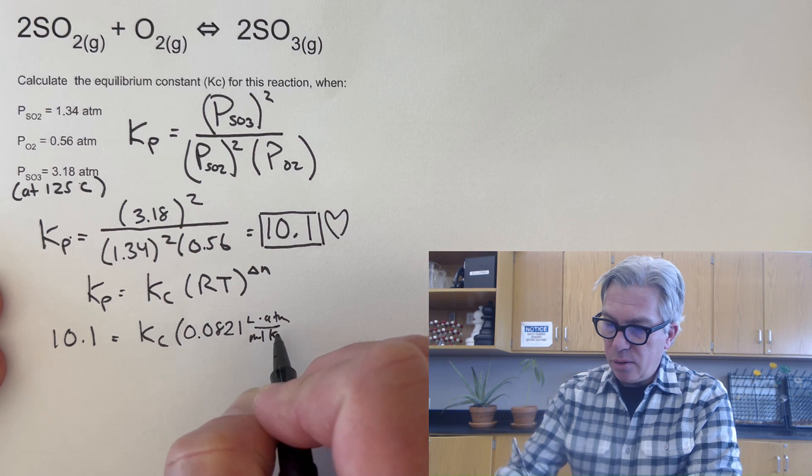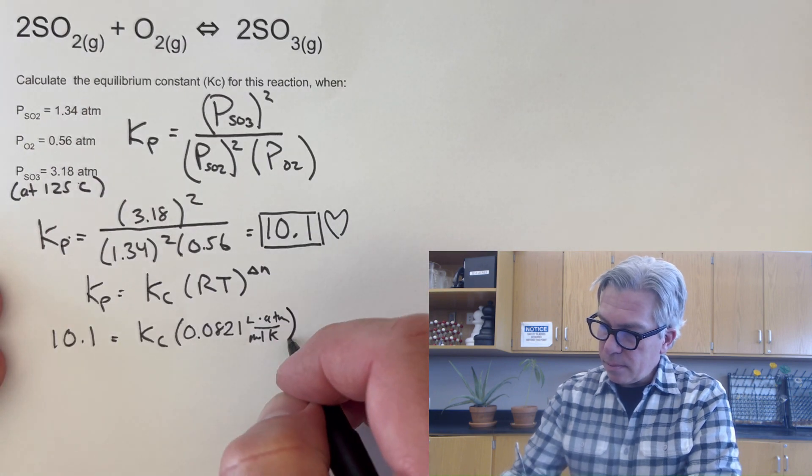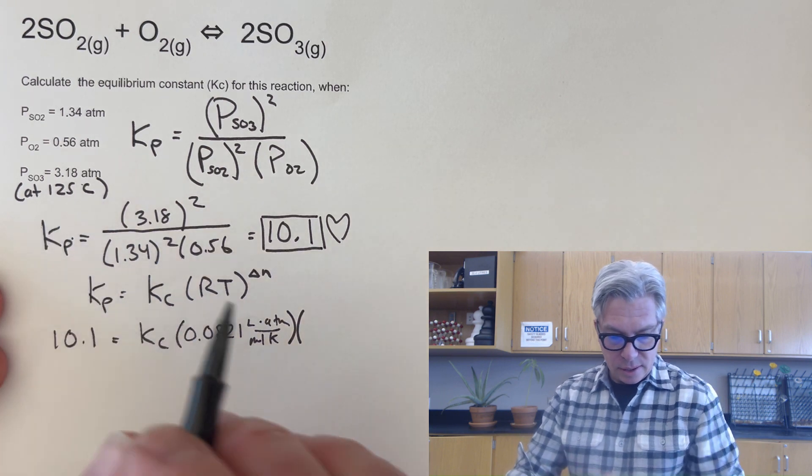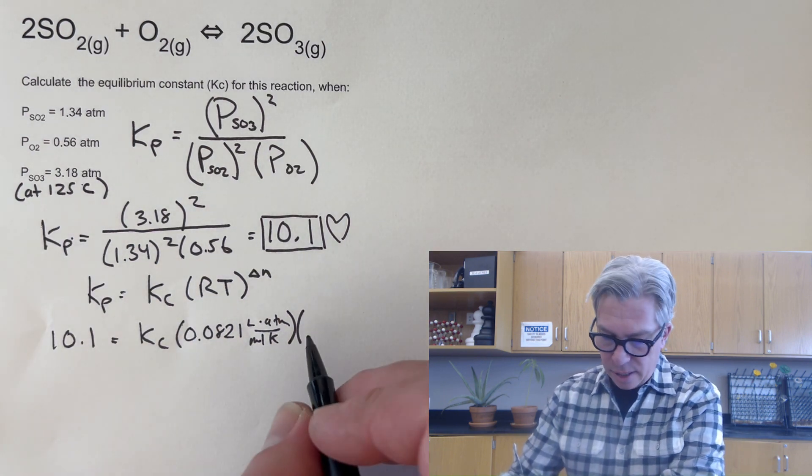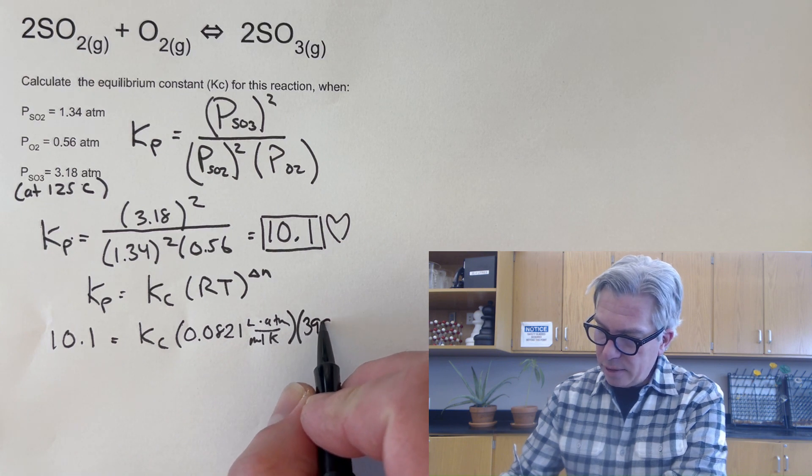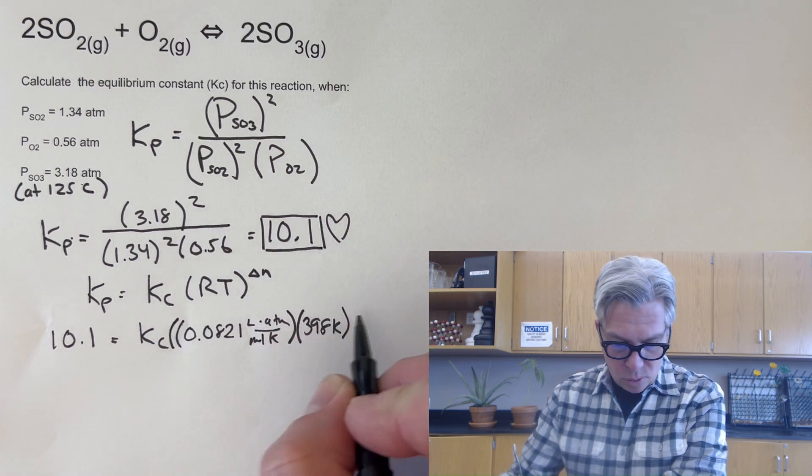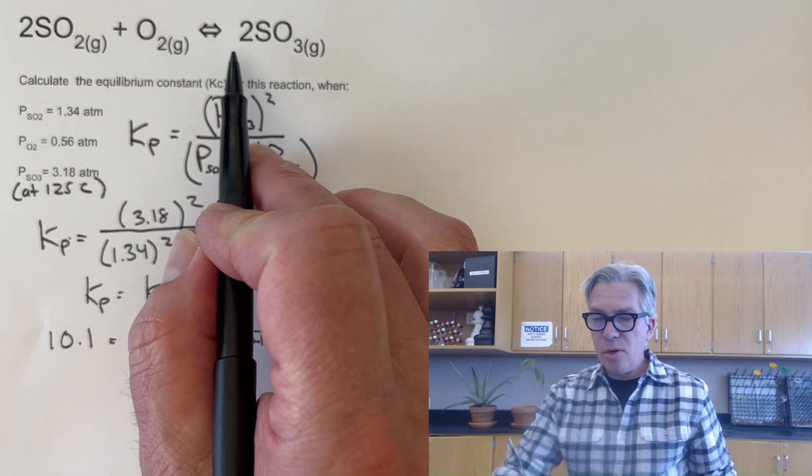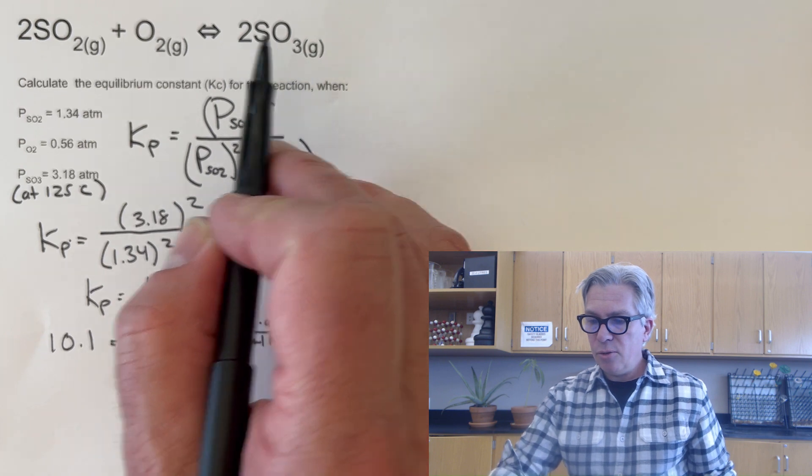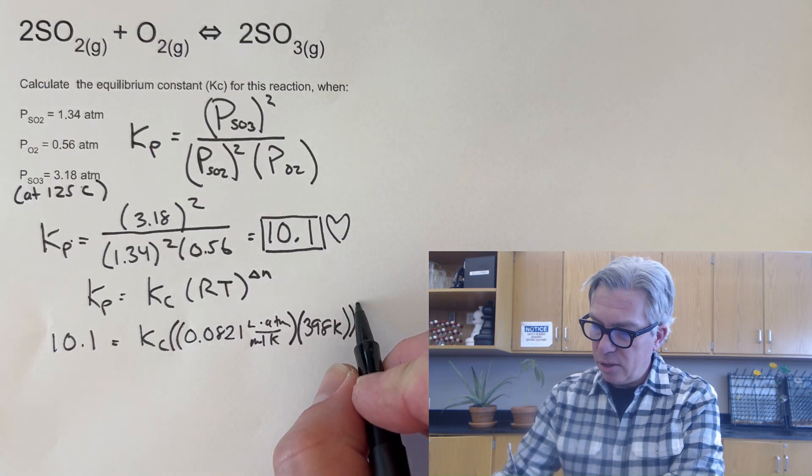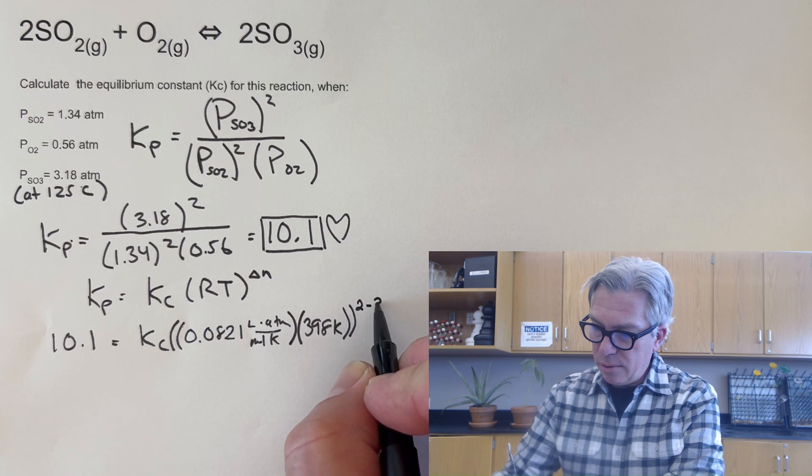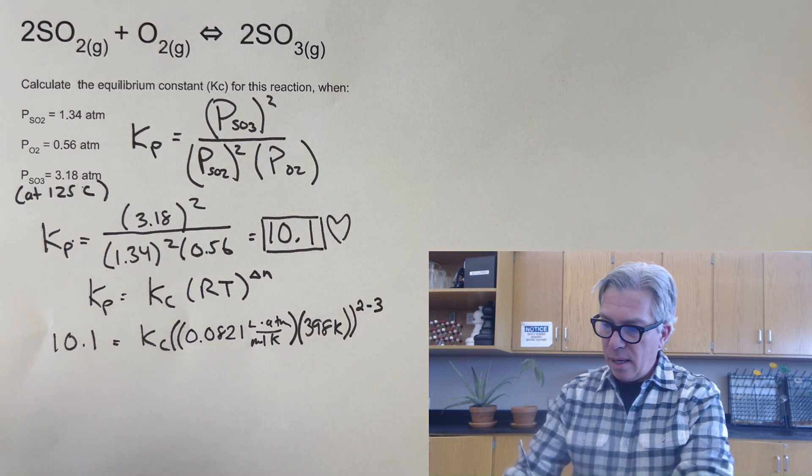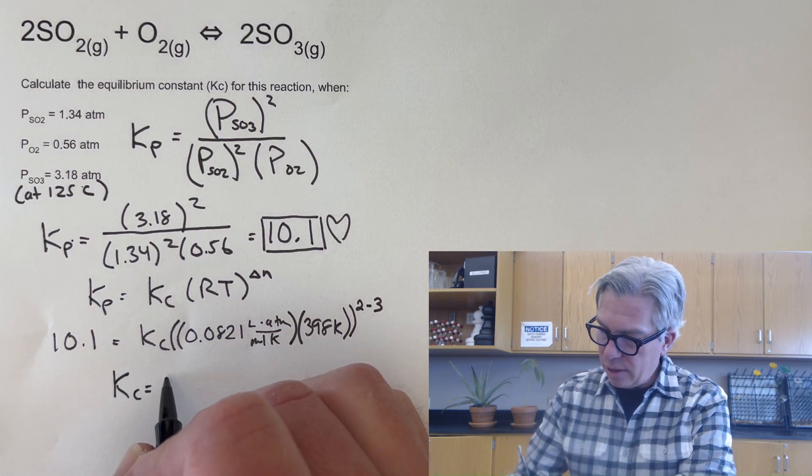Now, by convention, the ideal gas constant should be 0.0821 liters atmospheres moles Kelvins, because our units are in atmospheres. And the temperature here, I have a temperature here of 125 degrees Celsius, but that has to be in Kelvins. So make sure you're putting in 398 Kelvins. And then we're going to take that quantity raised to the delta n. Now, what is the delta n for this reaction? There's two moles of product, and then two plus one moles of reactants. So my delta n is going to be two minus three or a negative one. I'm going to take all this raised to the negative one. And then I'm going to move it over to the other side.